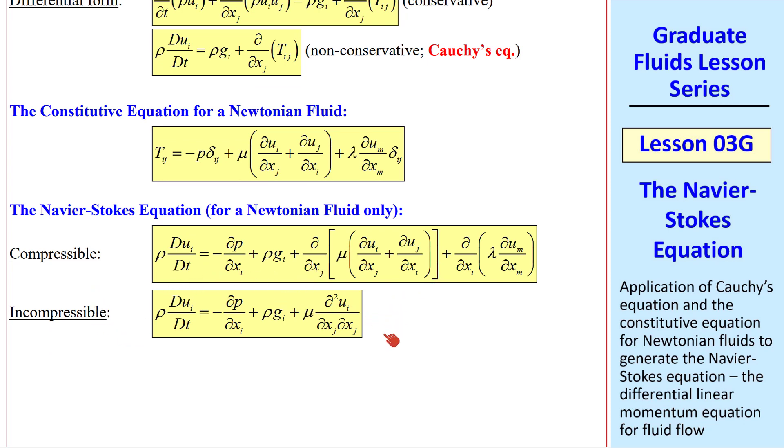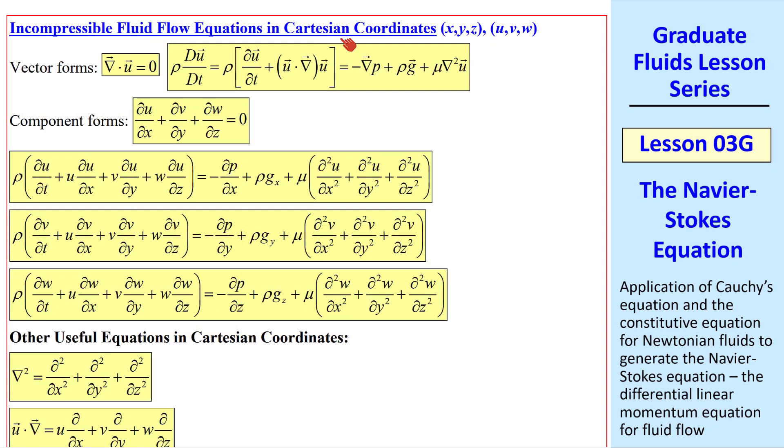To put these into computational fluid dynamics code, or to solve some of the simple flows, we often need to write out the components. I'll use Cartesian coordinates x, y, z, and u, v, w.